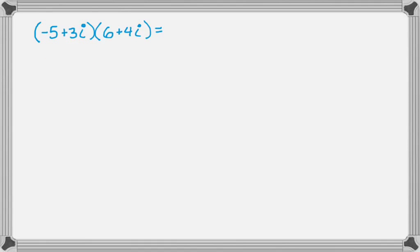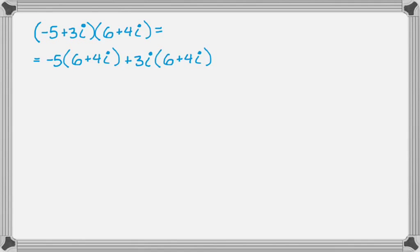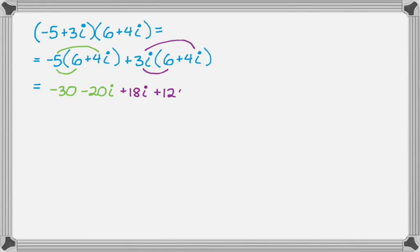Let's do one more. We have negative 5 plus 3i times 6 plus 4i. Using the distributive property: negative 5 times the quantity 6 plus 4i, plus 3i times the quantity 6 plus 4i. So: negative 5 times 6 is negative 30, negative 5 times 4i is negative 20i, 3i times 6 is plus 18i, and 3i times 4i is plus 12i squared.